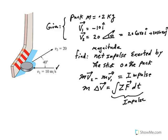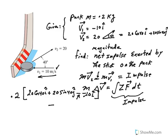So we have mass 0.2 kilograms times v2 minus v1. V2 is 20cos(40°)î + 20sin(40°)ĵ, minus v1 which is -(-10î). Be careful, the negative is from the change, and the other negative is from the direction of this pointing this way. This equals impulse.